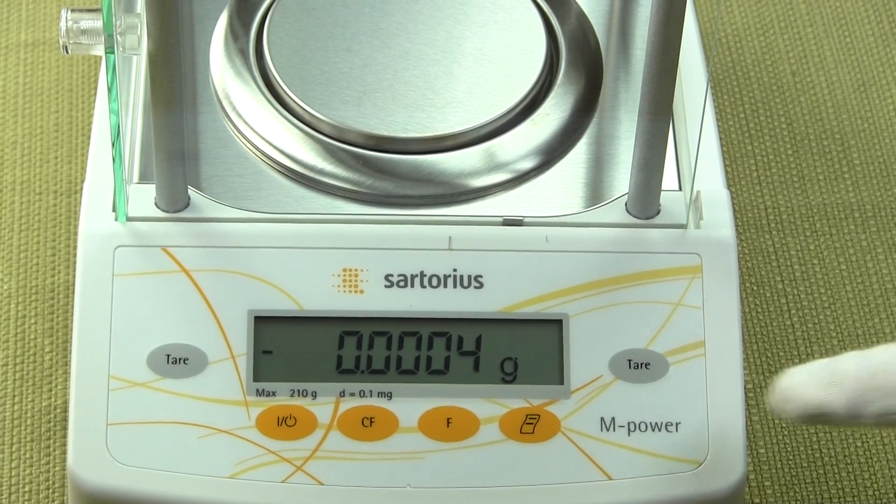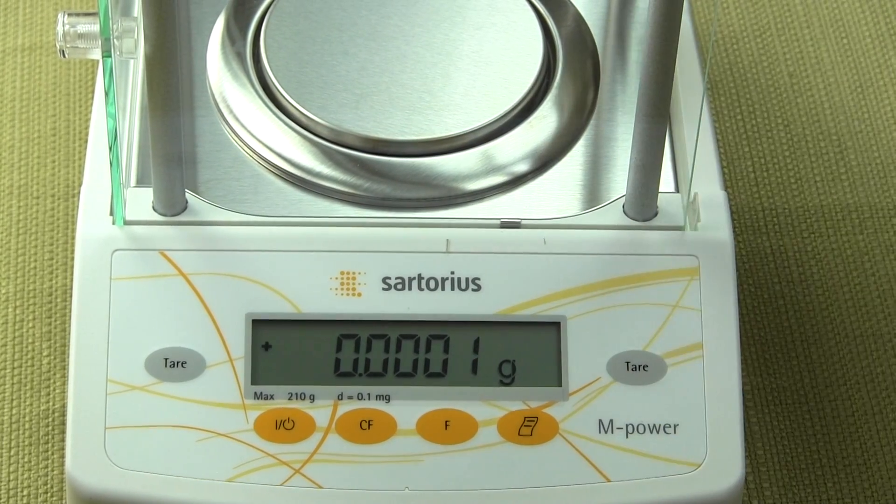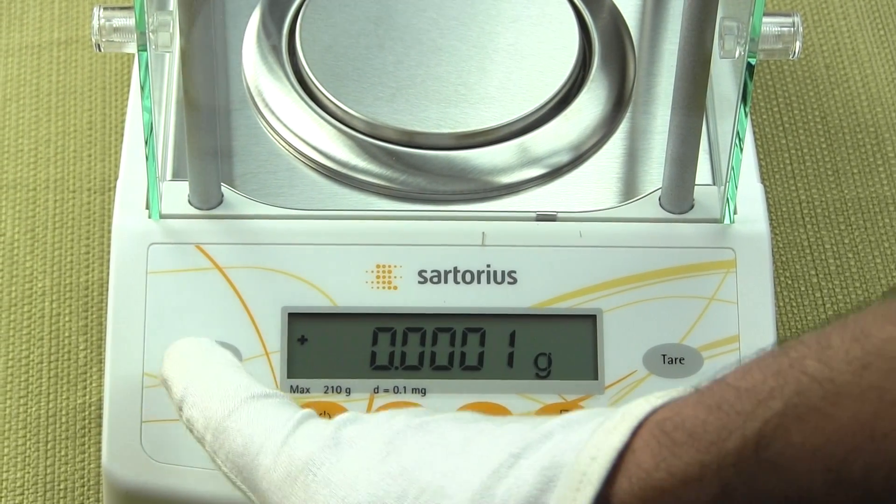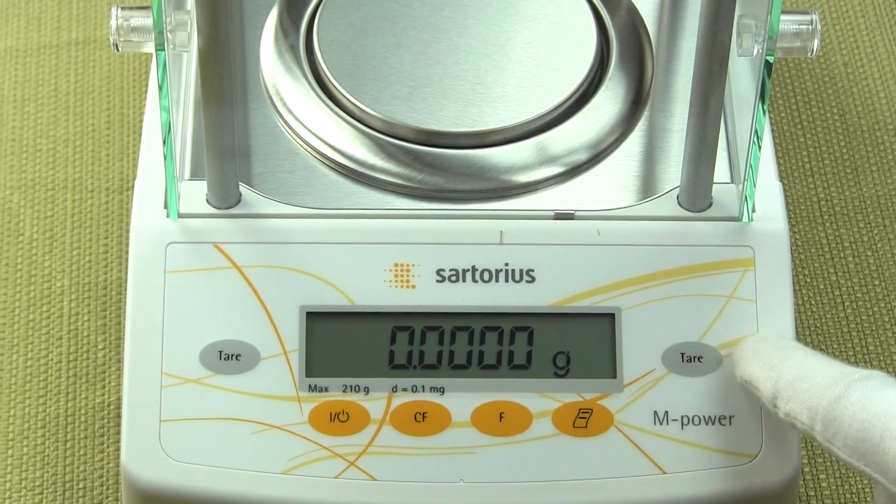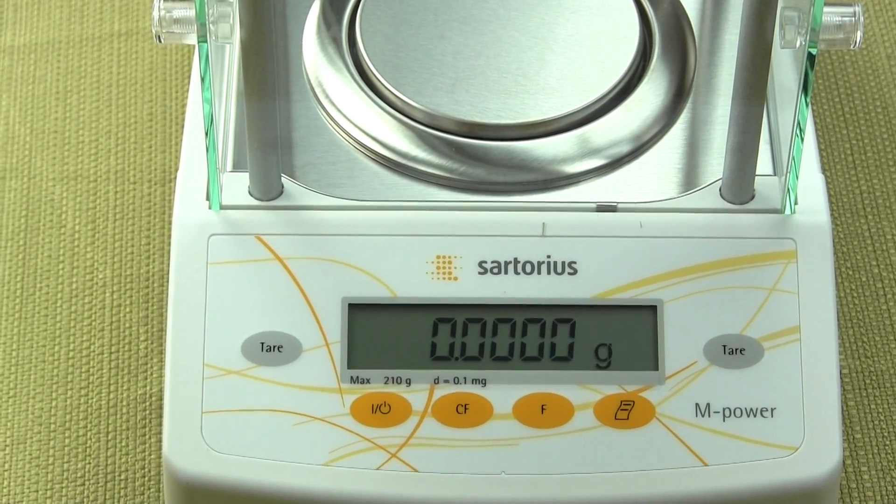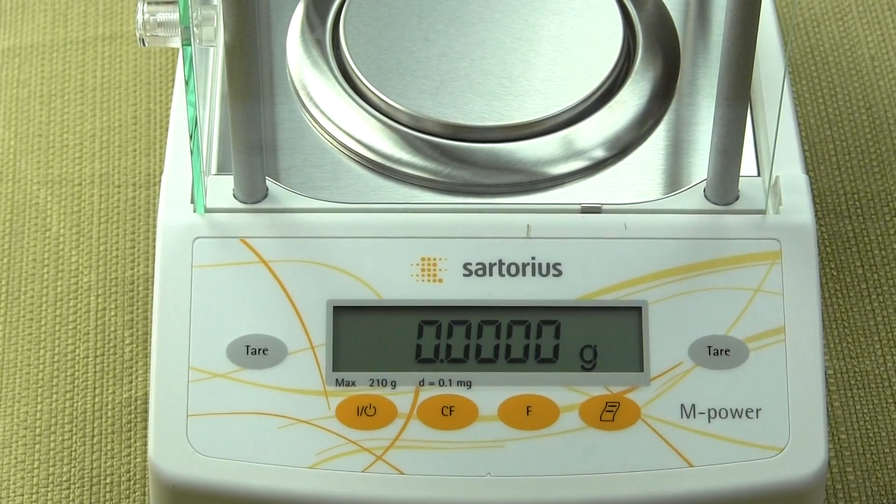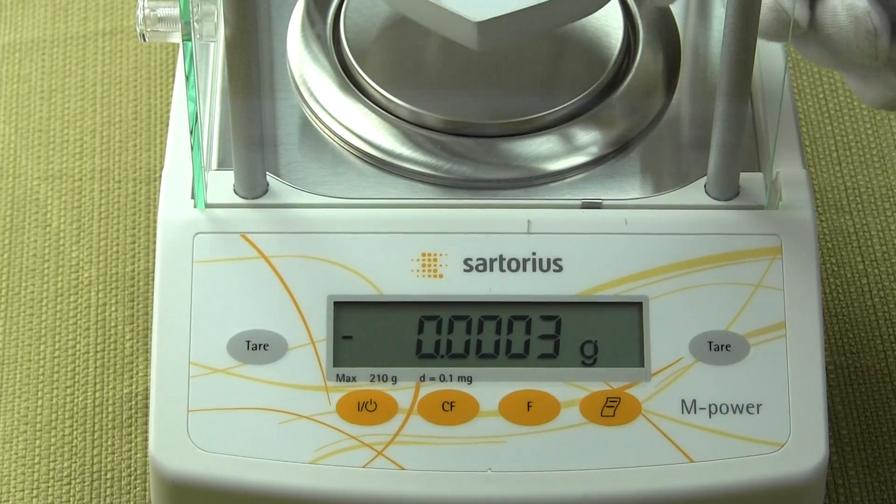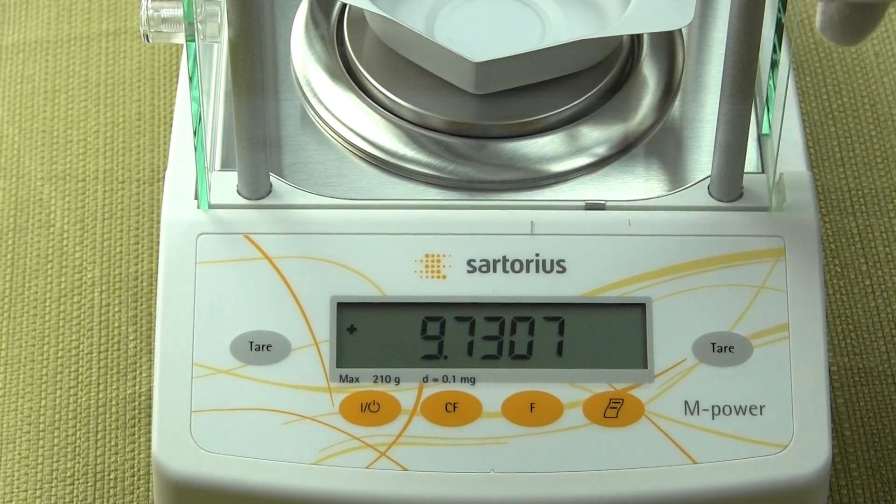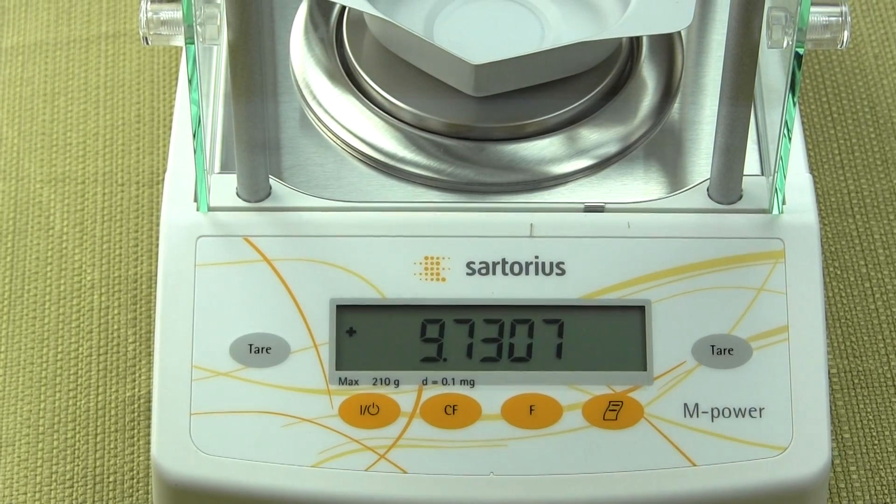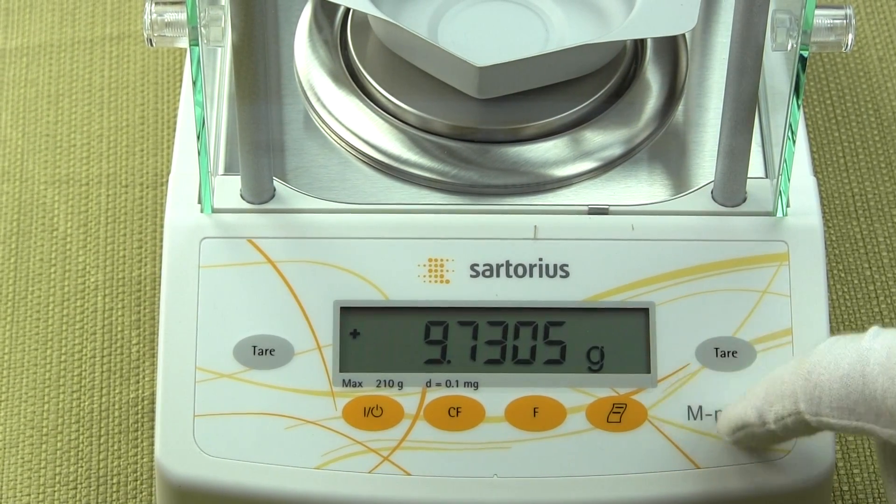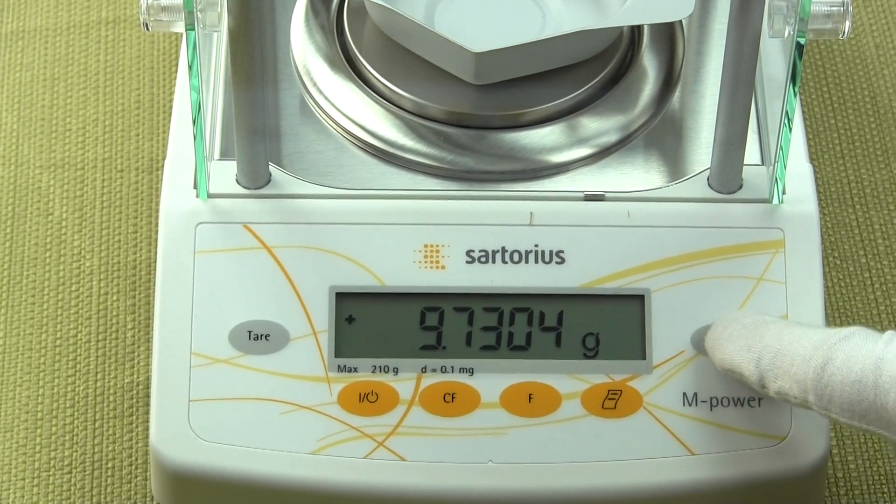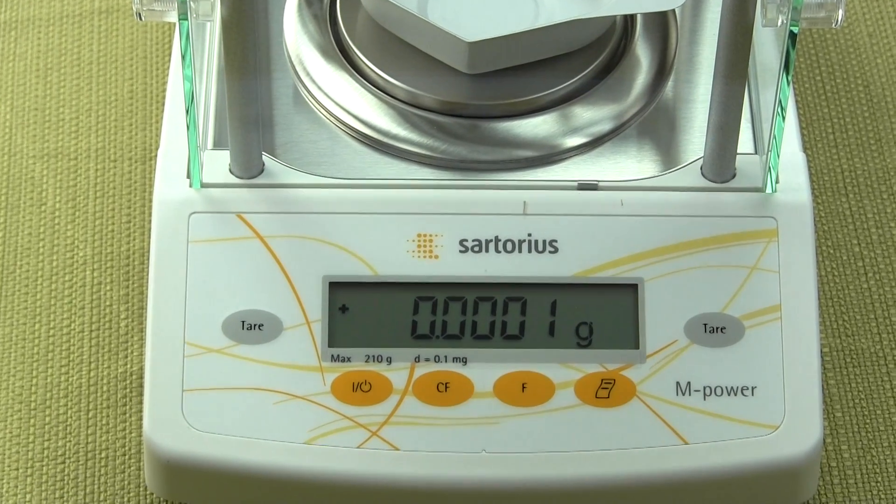Let's go over a few more of the features and how simple it is to use the balance. You'll notice with this balance we have two tare buttons, one on the right and one on the left. If we were to put an item on, for example, we sell these weigh dishes that are very nice because they're lightweight. You can put that on the balance and you could tare it out. You just simply hit the tare button and I can do it either on the right or the left hand side.